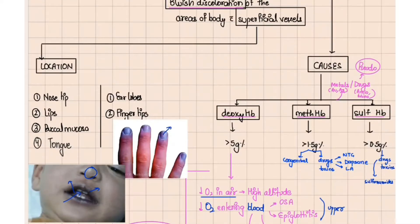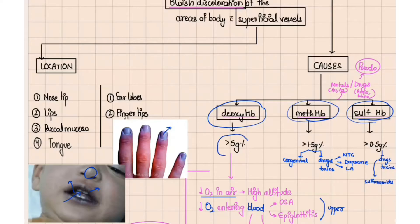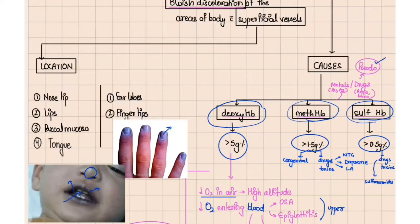The different causes of blue discoloration include anything blue in the blood: deoxyhemoglobin, methemoglobin, sulfhemoglobin, and also some drugs or metals. Deoxyhemoglobin more than 5 gram percent, methemoglobin more than 1.5 gram percent, and sulfhemoglobin more than 0.5 gram percent constitutes cyanosis. When metals like gold or silver, or drugs like amiodarone or minocycline cause blue discoloration, it is referred to as pseudocyanosis.